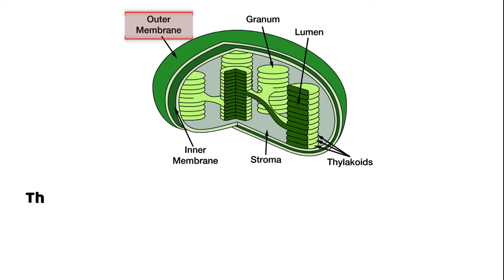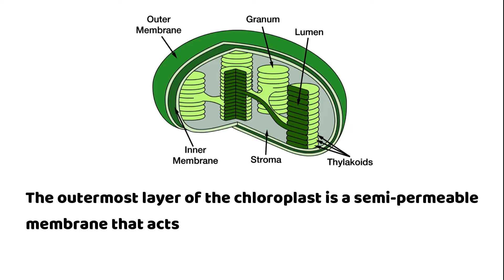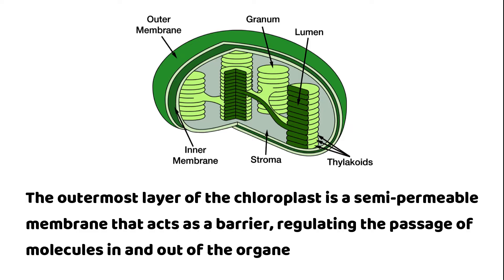Outer Membrane: The outermost layer of the chloroplast is a semi-permeable membrane that acts as a barrier, regulating the passage of molecules in and out of the organelle.